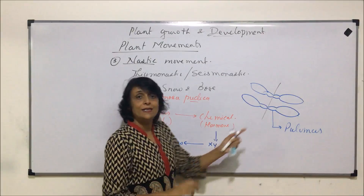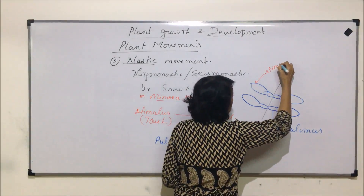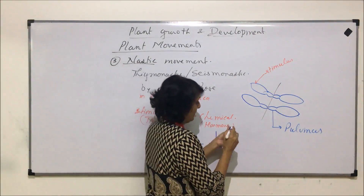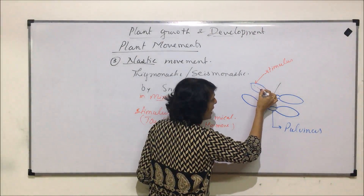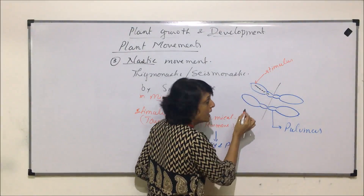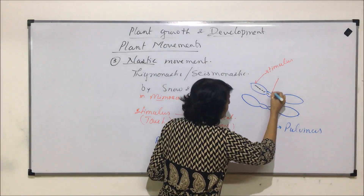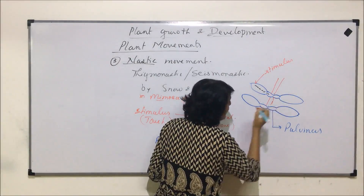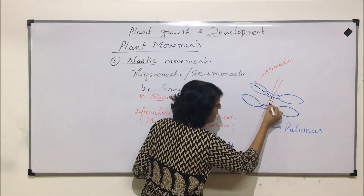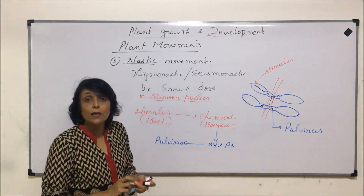This chemical, from wherever the stimulus has been received, moves through xylem and phloem — that is, through the conductive tissue — and reaches the pulvinus. The chemical travels through the conducting tissue and goes to all the leaf bases, that is, to all the pulvini.